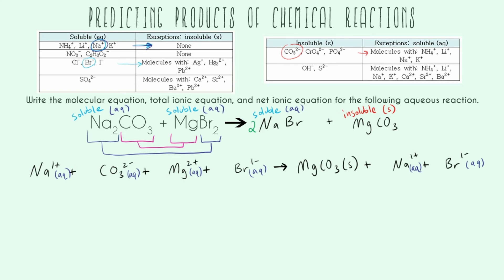So now doing the balancing from molecular to total ionic, it changes a little bit because we have things that have completely dissolved. So I have to put a 2 here in front of sodium because of this 2 right here. And when it dissolves, it's going to separate into 2 sodiums. Carbonate is still fine having 1.